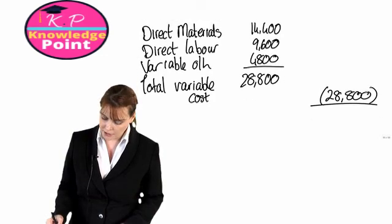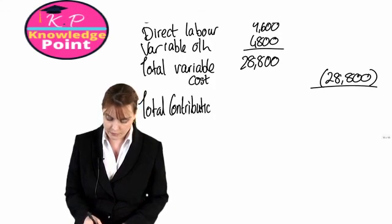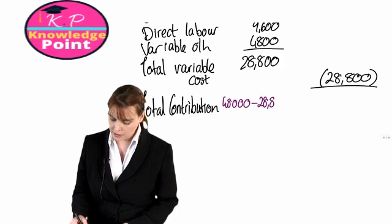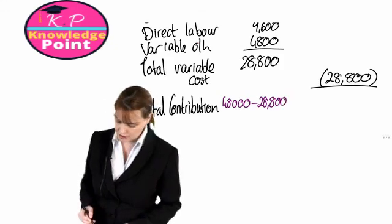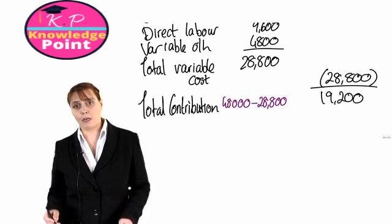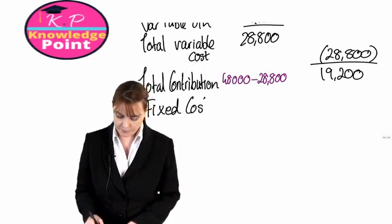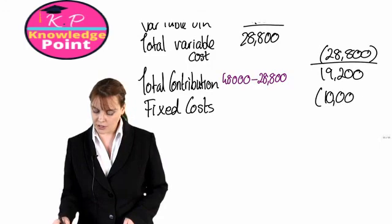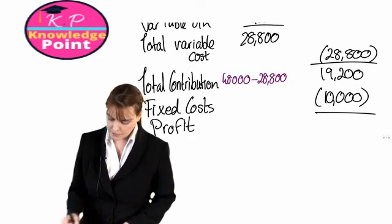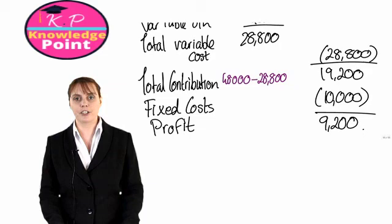We subtract our total variable costs from our sales revenue to calculate our total contribution. Sales revenue of £48,000 minus total variable costs of £28,800 gives us a total contribution of £19,200. Our final step in the marginal costing system is to deduct our fixed costs. We know our fixed costs were £10,000 in total, so we get a profit of £9,200. And that's our marginal costing profit calculation complete.